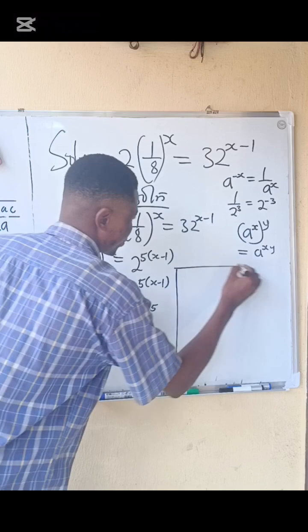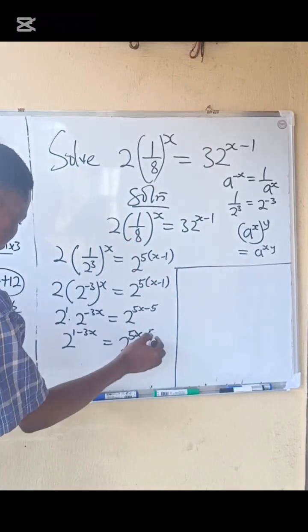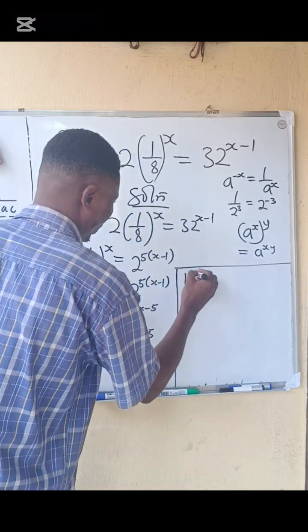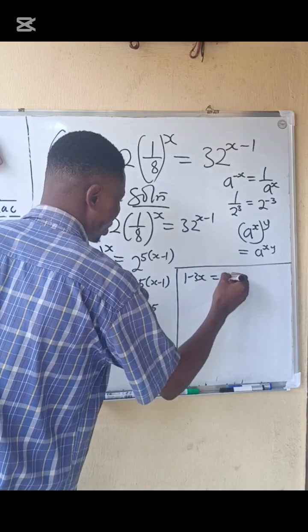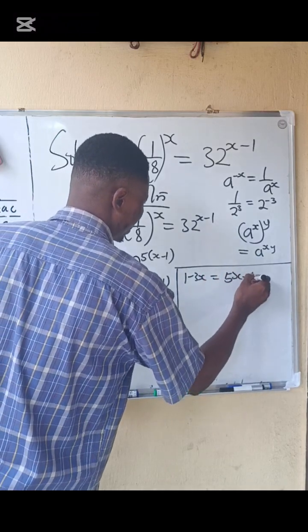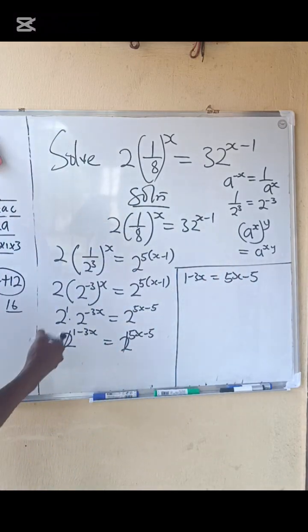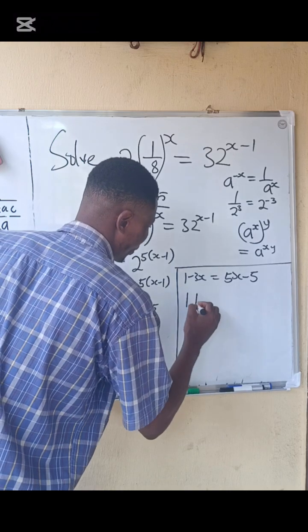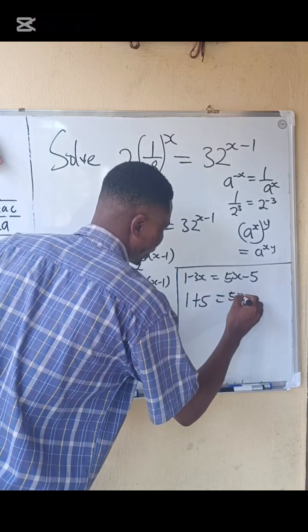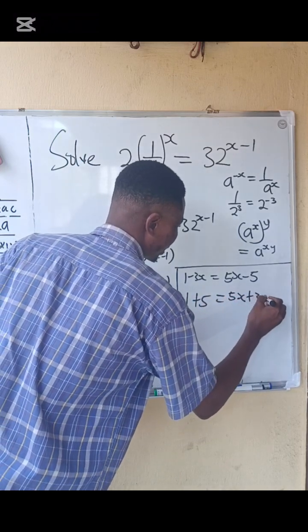So we proceed. Now they are of the same base. We now equate the powers. 1 minus 3x equals to 5x minus 5. What next do we do? We collect like terms. 1 plus 5 equals to 5x plus 3x.